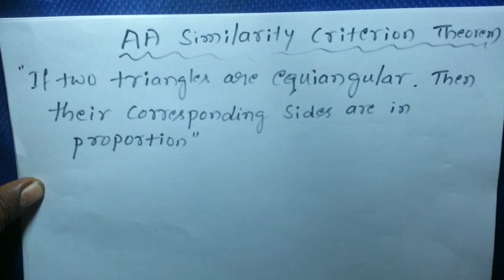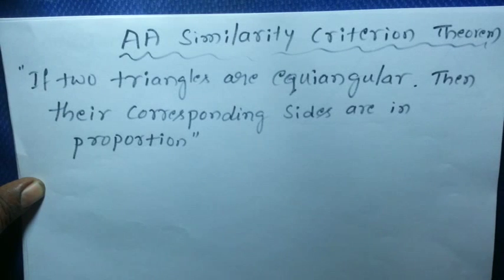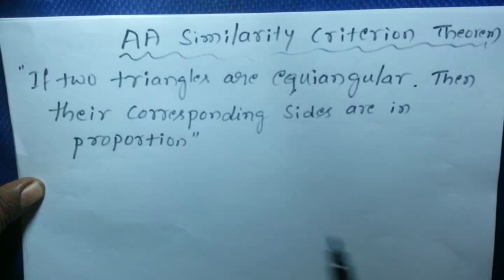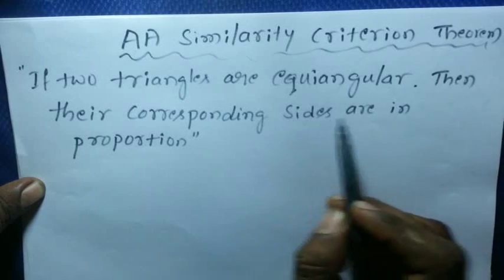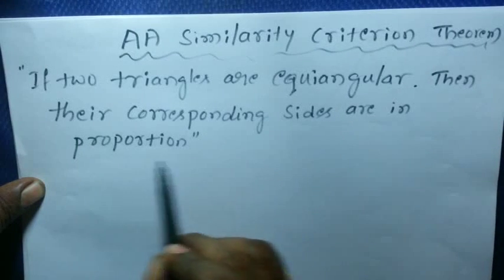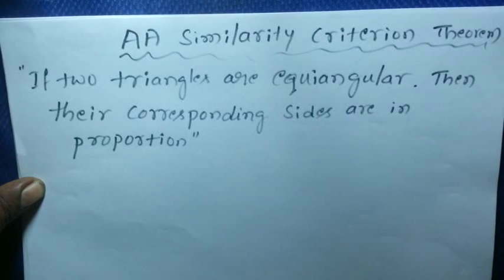Today we are going to study about the AA Similarity Criteria Theorem. The statement says: if two triangles are equiangular, then their corresponding sides are in proportion.